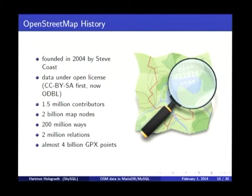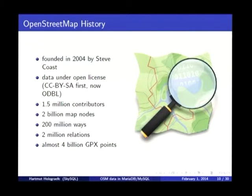We have 200 million ways — streets, building outlines, borders, rivers, whatever. And about 2 million relations that describe more complicated things like administrative borders, buildings that belong together on a site like a campus, or hiking or bus routes. We also have a lot of people who don't actively edit OpenStreetMap but provide GPS traces that we can use to generate map data. So that's a pretty good dataset to have.